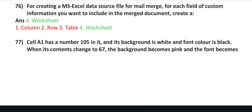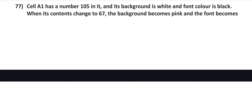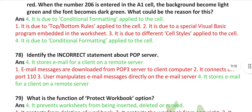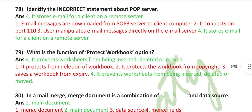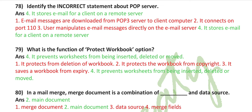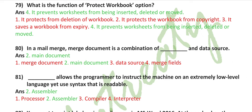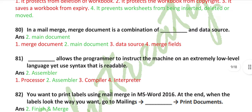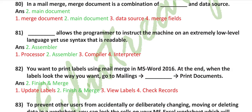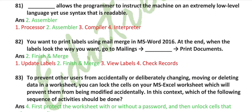Cell A1 has the number 105 in it and its background is white and font color is black. When its contents change to 67, the background becomes pink and font becomes red. When the number 206 is entered in A1 cell, the background becomes light green and font becomes dark green. What could be the reason for this? It is due to conditional formatting applied to the cell. Identify the incorrect statement about POP server: it stores email for a client on a remote server. What is the function of protect workbook option? It prevents worksheets from being inserted, deleted, or moved. In a mail merge, merge document is a combination of main document and data source.